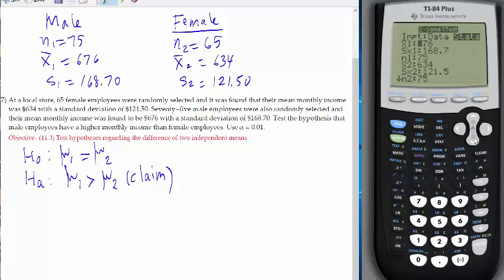Okay, stats. X1 bar, I entered some of the numbers just to save time, so 676 for mu1. S1 is 168.70, n1 is 75. Then I enter x2 bar, 634, standard deviation 121.50, and n2 is 65.